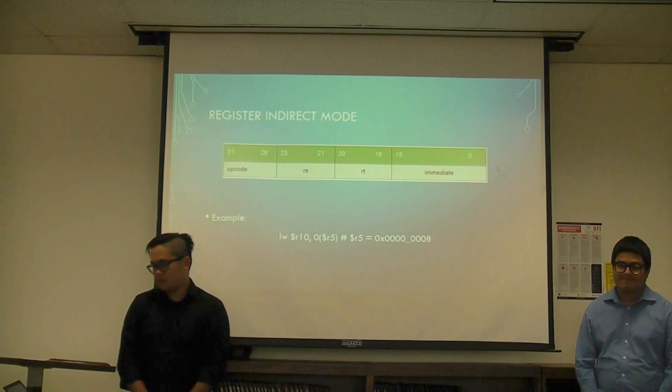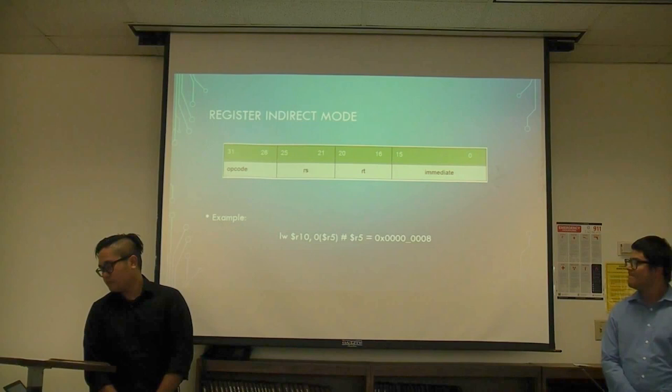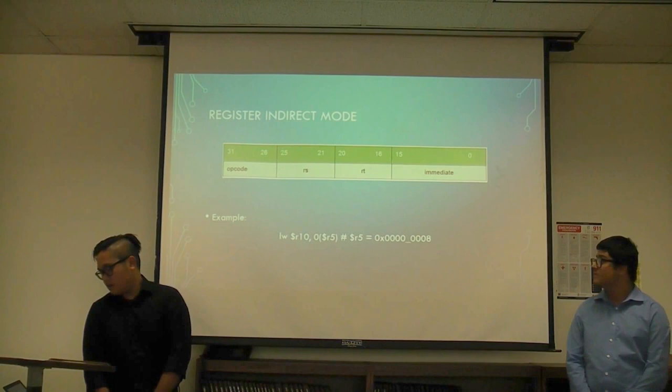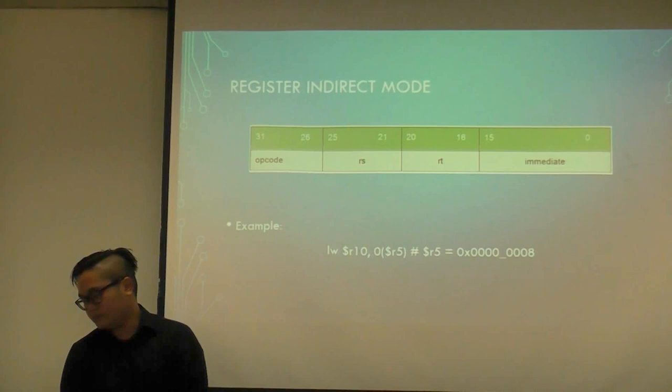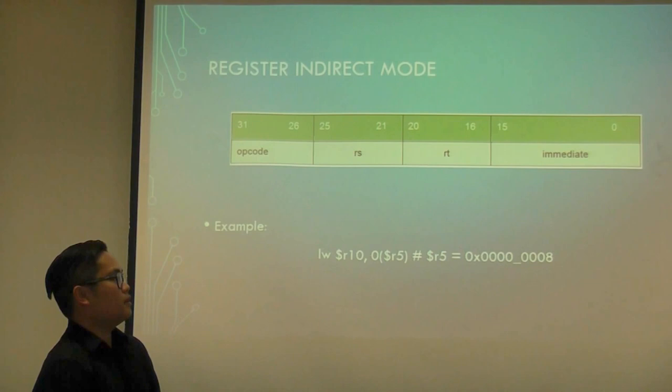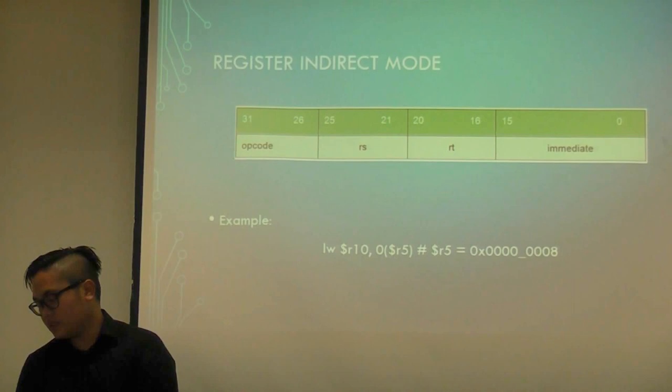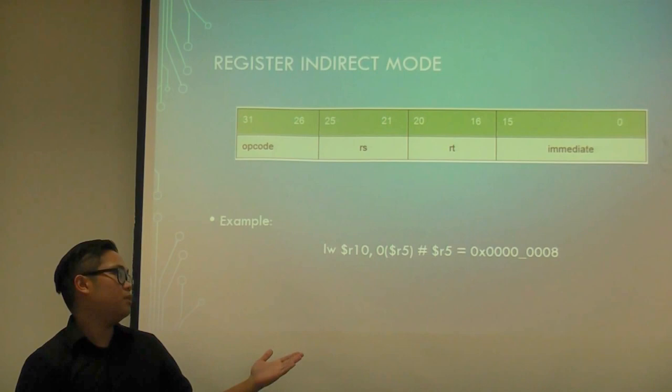Now we have register indirect mode. In this mode, we use I-type formats to access or write to memory, which are the load and store word instructions. This is because we have a base pointer. In this example, 0 is a sign-extended immediate field, and R5 would be the base pointer with the value of 8. R10 would be the destination that gets the memory at base pointer 0 plus R5, which is hex 8.